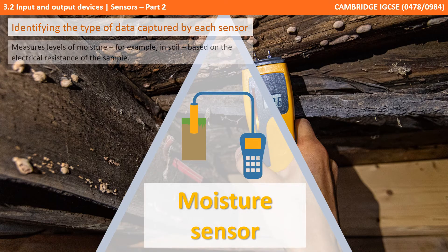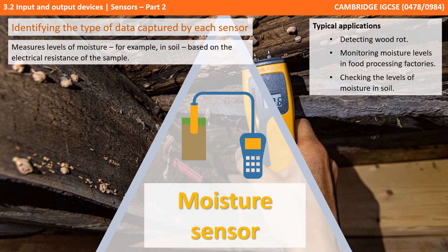Next up we have moisture sensors. This measures the amount of moisture in, for example, soil, based on the electrical resistance of the sample being monitored. It can be used to detect the presence of wood rot, especially in old wooden structures, for monitoring moisture levels during food processing, and for monitoring moisture levels in soil for agriculture.